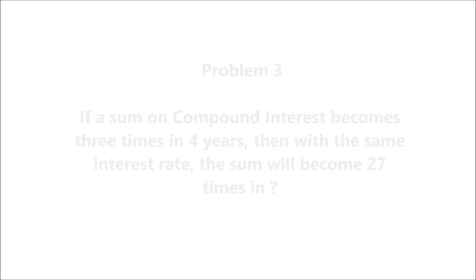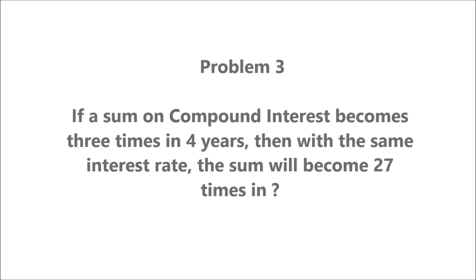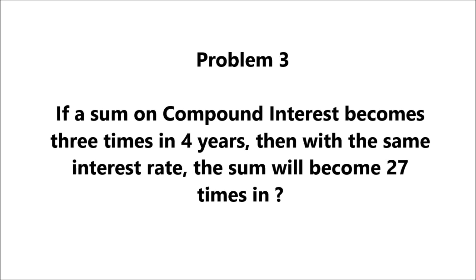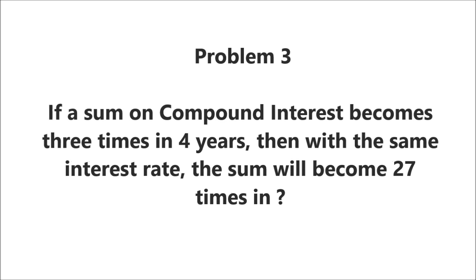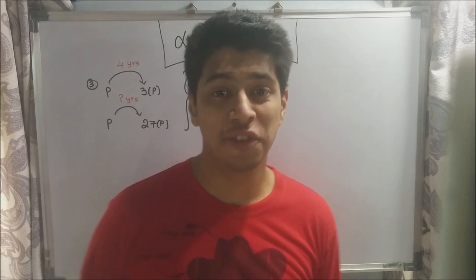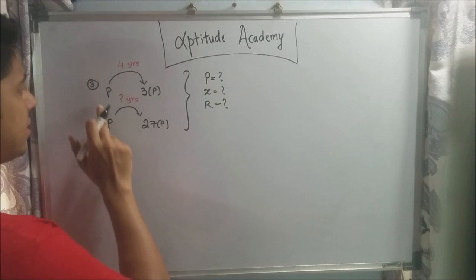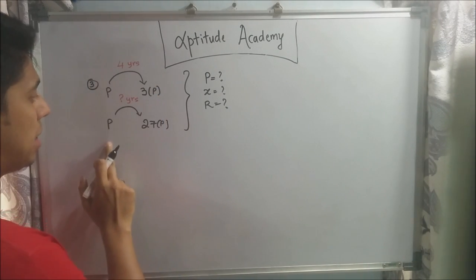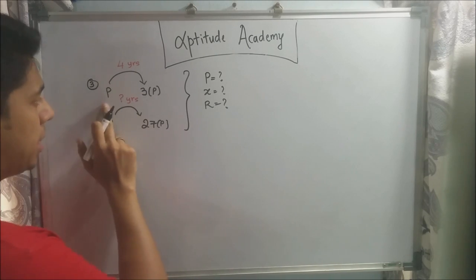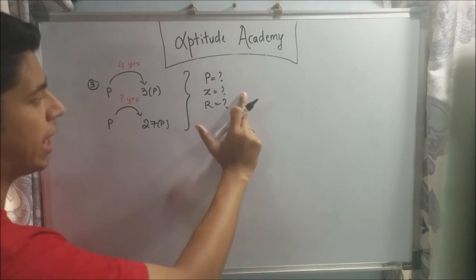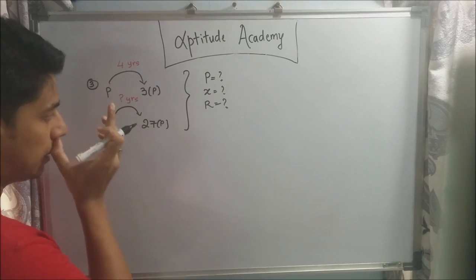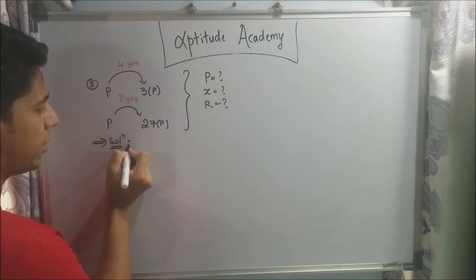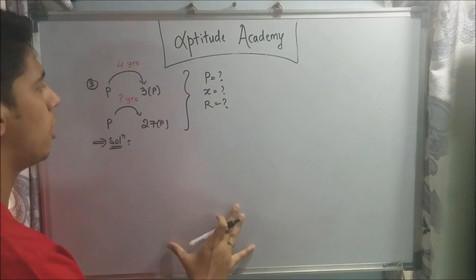Problem 3: If a sum on compound interest becomes 3 times in 4 years, then with the same interest rate, the sum will become 27 times in how many years? They have not given P, X, or R. These kinds of problems seem tough, but there is a simple trick that makes it easy.